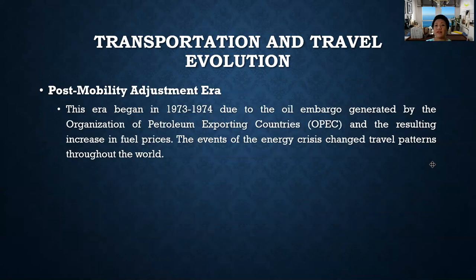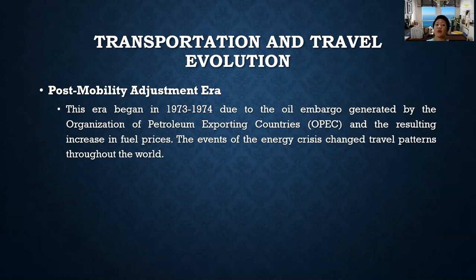Lastly, we have the post-mobility adjustment era. This era began in 1973 to 1974 due to the oil embargo generated by the Organization of Petroleum Exporting Countries, or OPEC, and the resulting increase in fuel prices. The events of the energy crisis changed travel patterns throughout the world. When oil prices increase, the cost for transportation also increases, which affects our modes of transportation.